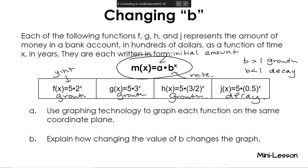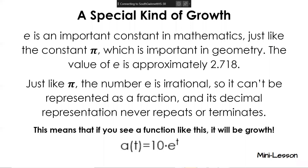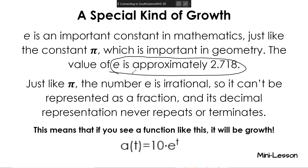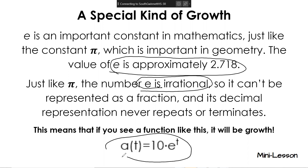We're going to introduce a new irrational number: e. E is irrational and approximately 2.718. This is kind of like how pi is 3.14 — e does the same thing. E is irrational, which means it can't be represented as a fraction and its decimal representation never repeats or terminates. You may see a function written with e. Write down everything that is circled.